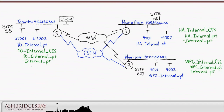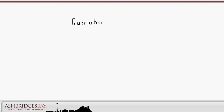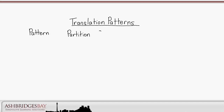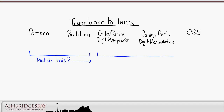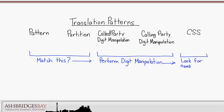With a site code strategy in place, let's look at how we can dial between sites using translation patterns. Translation patterns take one pattern and translate it into another. A translation pattern has a pattern — just like route patterns — in a partition. It provides digit manipulation of both called and calling party numbers, and there's a calling search space used to locate the translated number.